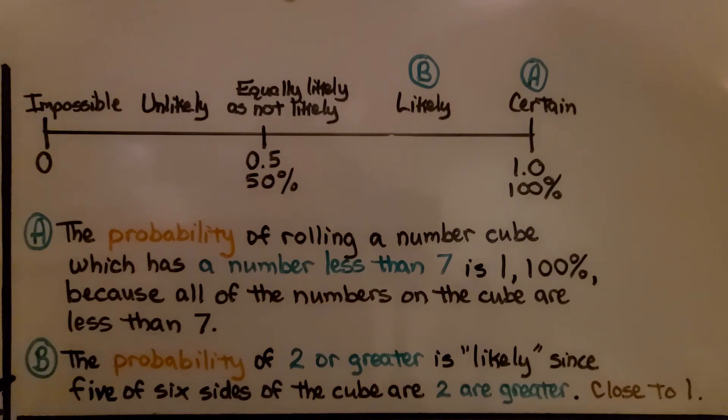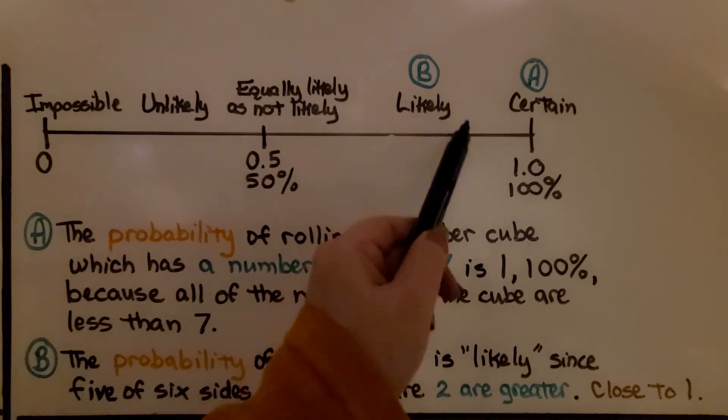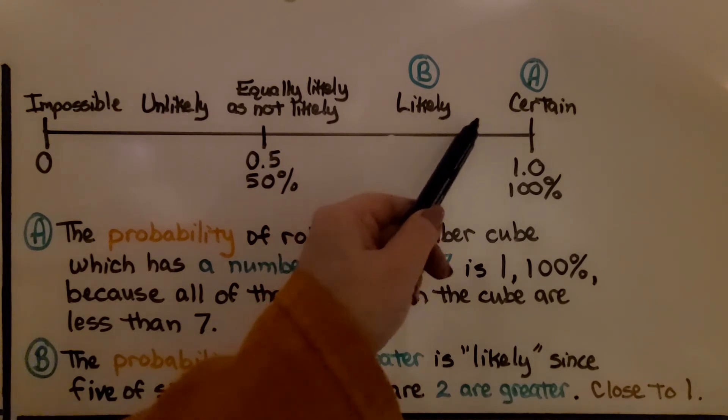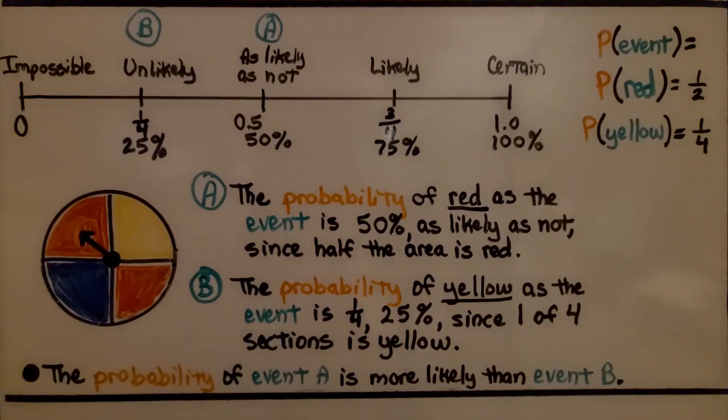For event B, the probability of two or greater is likely since five of six sides of the cube are two or greater. We would have two, three, four, five, six. So that's very likely that we would roll a two or greater. It would be likely. It would be close to this one. It would be close to certain.